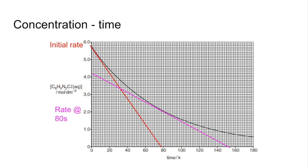And you can see clearly that the gradients are different so the rate is changing with the concentration. So this obviously can't be zero order.